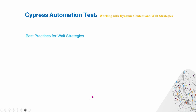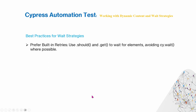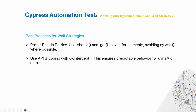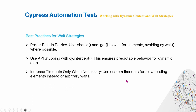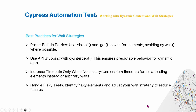The best practices for wait strategies: prefer built-in retries — use .should and cy.get to wait for elements and avoid cy.wait as much as possible. Use API stubbing with cy.intercept to ensure predictable behavior for dynamic data. Increase timeouts only when necessary, and handle flaky tests by identifying flaky elements and adjusting your wait strategy to reduce failures.